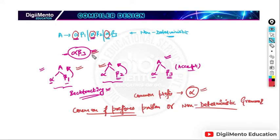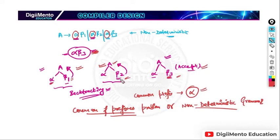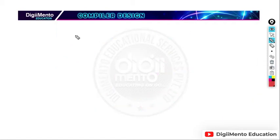If we could see the input completely in one go — alpha beta3 — then deciding which production to choose would be no problem. But here we see alpha first and then decide whether it is beta1, beta2, or beta3. In the first two cases we have to backtrack to A, but in the case of beta3 it accepts. Due to this problem we want to eliminate non-determinism, which is the common prefixes problem. The process of doing that is known as eliminating non-determinism or left factoring.